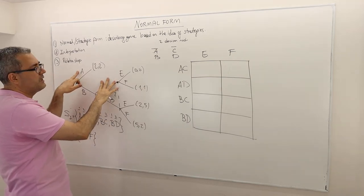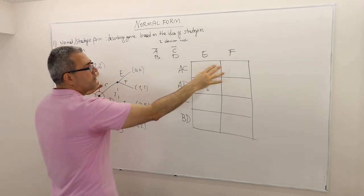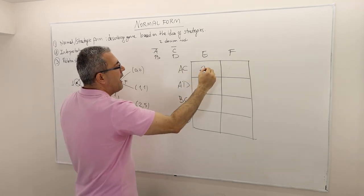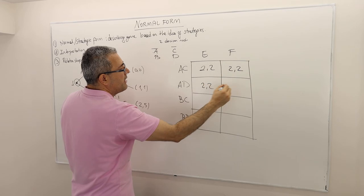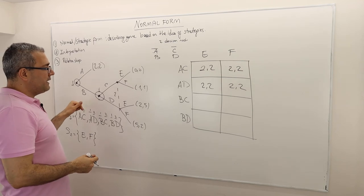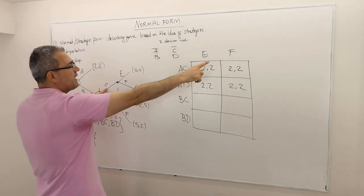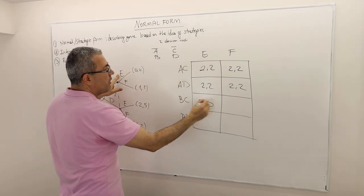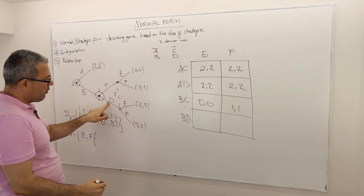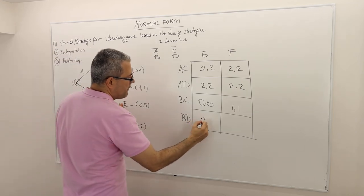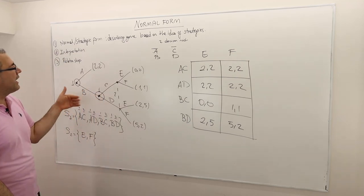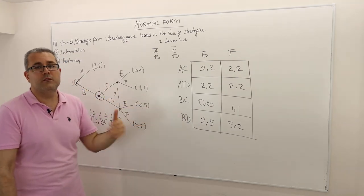Now we fill in the boxes. For strategy AC — once A is played, the outcome is 2, 2 regardless of whether player two plays E or F, because those parts of the game are never reached. For BC with E it's 0, 0; with F it's 1, 1. For BD with E it's 2, 5, and with F it's 5, 2. This is the game tree format on one side and the strategic form of the same game on the other.